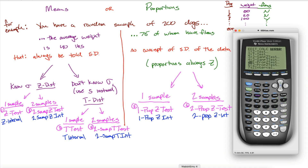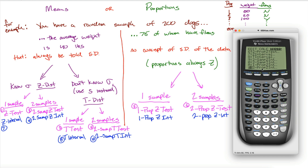On the calculator: z interval is number seven, t interval is eighth, two sample z interval is ninth, two sample t interval is tenth. Again, we're not going to consider two sample z intervals. Scroll down further and the eleventh and twelfth — listed as A and B — are one prop z interval and two prop z interval.